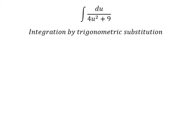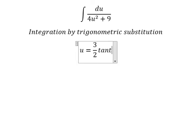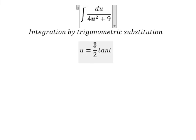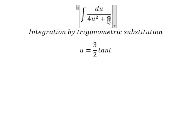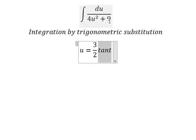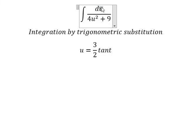I will put u equals to (3/2) times t, because if I put this in here, we have nine over four times t squared. Number four and number four cancel, number nine and number nine — we can do factorization. We get (tan² t + 1), changing the sequence of t squared, and later simplify by du.